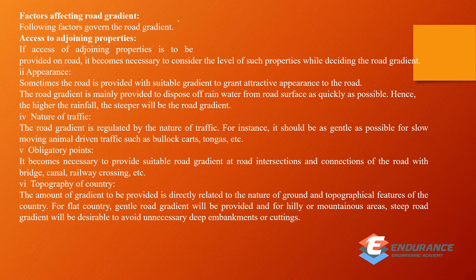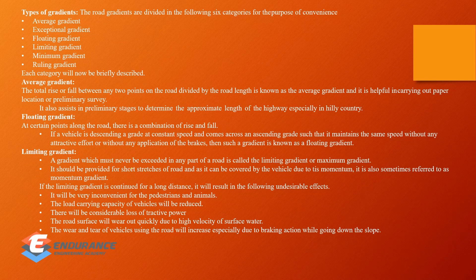The next step is the factors affecting road gradient: access to adjoining properties, appearance, traffic, obligatory points, area topography, and type of terrain. The types of gradient are: average gradient, exceptional gradient, floating gradient, limiting gradient, minimum gradient, and ruling gradient. The average gradient is the total rise or fall between any two points on the road divided by the road length — this is calculated at the preliminary stage and considers the combination of rise and fall.